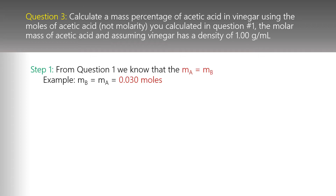The moles of acetic acid equals the moles of base used, which equals the concentration of the base times the volume of the base. Going back to our example, that's 0.030 moles. That's the value you use — not the molarity.